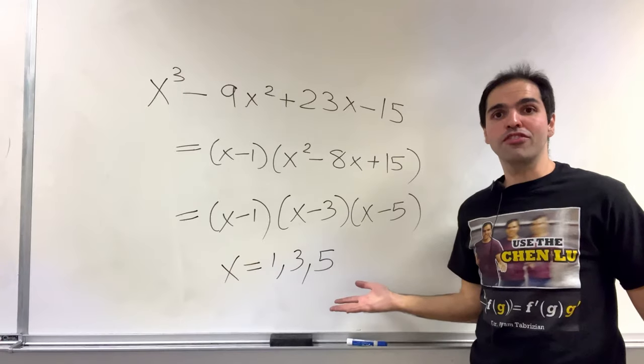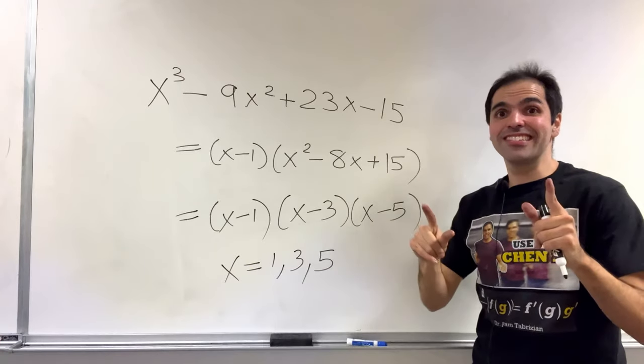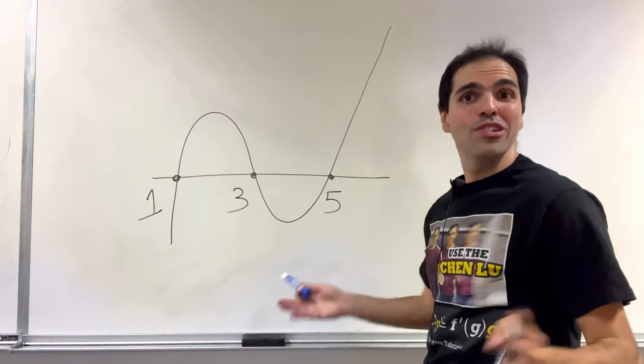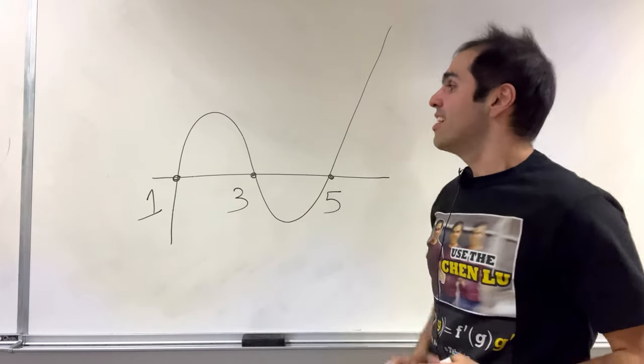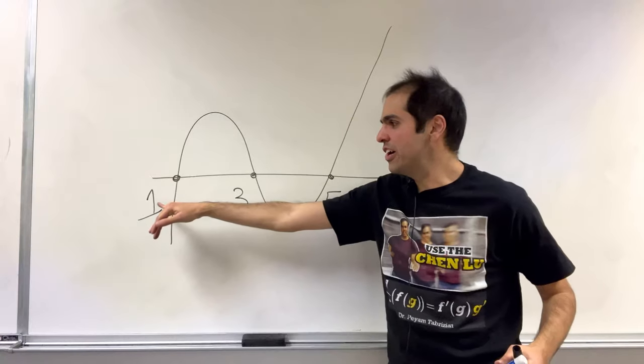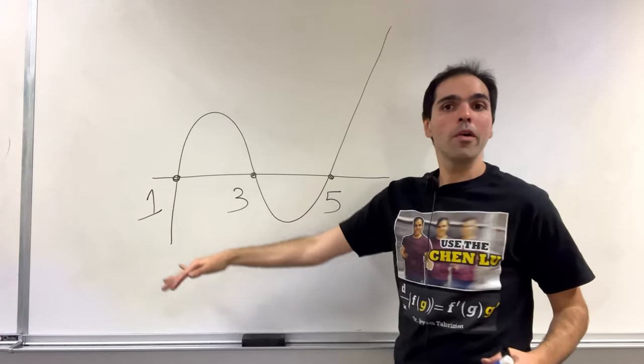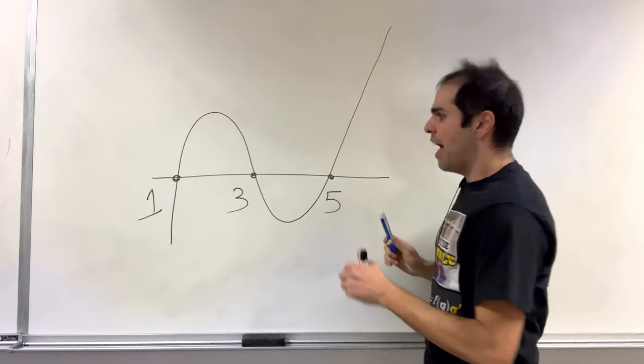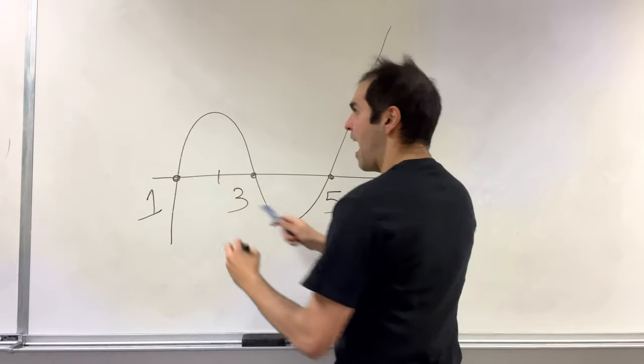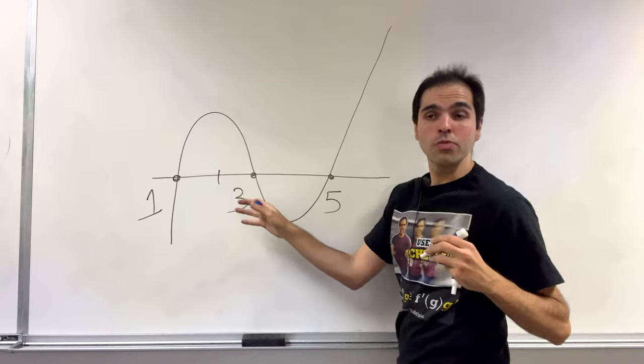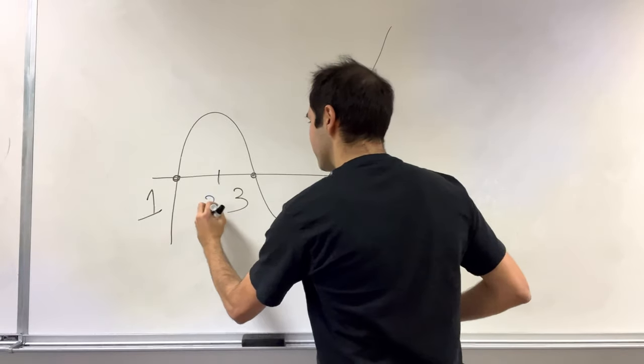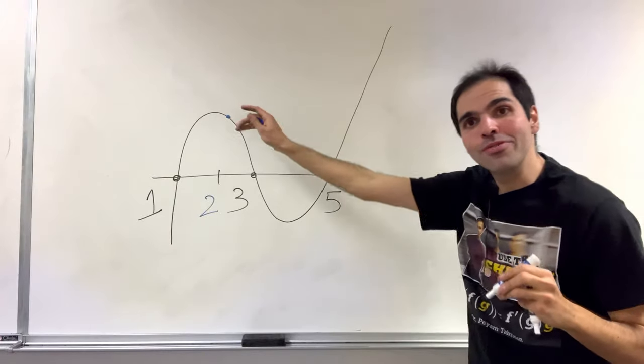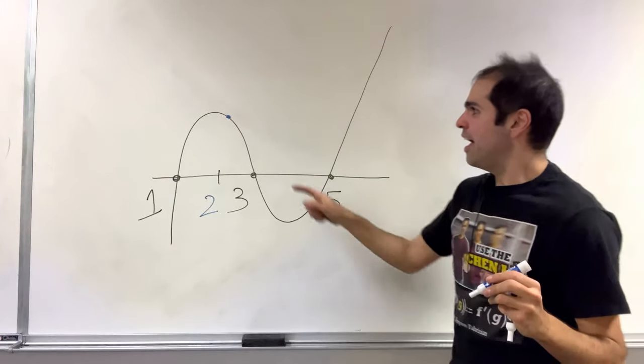Now you might say, what does this have to do with projectiles? Well, consider the following scenario. You have this polynomial with roots 1, 3, and 5. Think of it as a cliff. And consider the average between the two smallest roots, so in this case it's 2—not quite at the maximum, a little bit to the right.